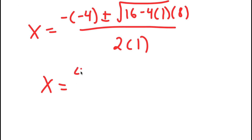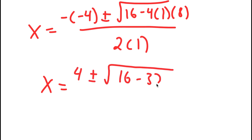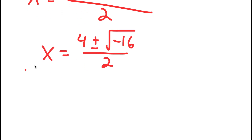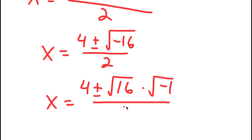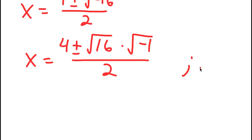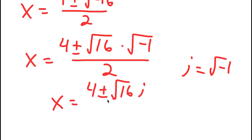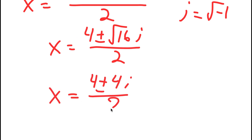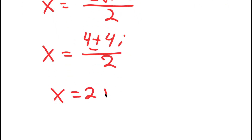This equals 4 plus or minus the square root of 16 minus 32 over 2, which is 4 plus or minus the square root of negative 16 over 2. The square root of negative 16 is the square root of 16 times the square root of negative 1. The imaginary number i equals the square root of negative 1, so I have x equals 4 plus or minus the square root of 16 times i over 2. The square root of 16 is 4, so x equals 4 plus or minus 4i over 2, which equals 2 plus or minus 2i.